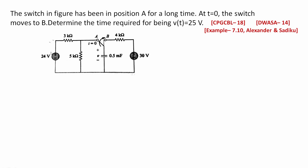The switch in the figure has been in position A for a long time. The position was closed for a long time. Then the flow was closed, and the position was open. If T is equal to zero, the switch moves to B.